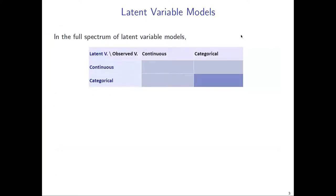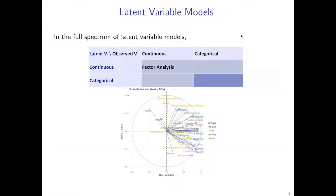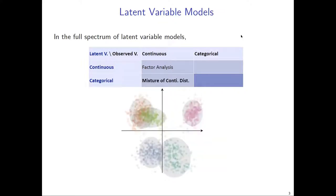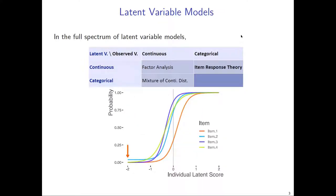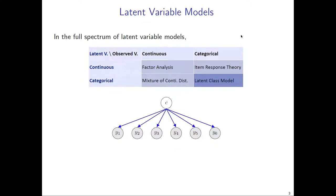I want to give you the context within this general family. Latent variable models can be basically divided into four types based on the nature of the observed and latent variables. For example, the most familiar factor analysis model uses continuous latent variables to model continuous observations. In my talk I will be focusing on the bottom right cell of this table — that is, using categorical latent variables to model categorical observations.